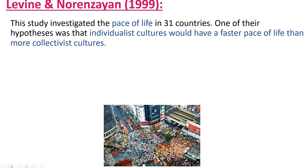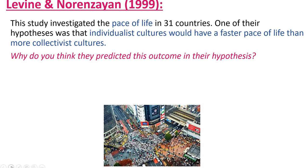That's not a huge revelation — collectivist cultures have an emphasis on community and family, so they're not necessarily going to be pushing individual needs. Whereas in a city like New York or London, people are more focused on what they have to do that day and won't necessarily be interested in what anyone else is doing. So why do you think they predicted this outcome in their hypothesis? Pause the presentation and have a go at analyzing this hypothesis: individualistic cultures will have a faster pace of life than more collectivist cultures.